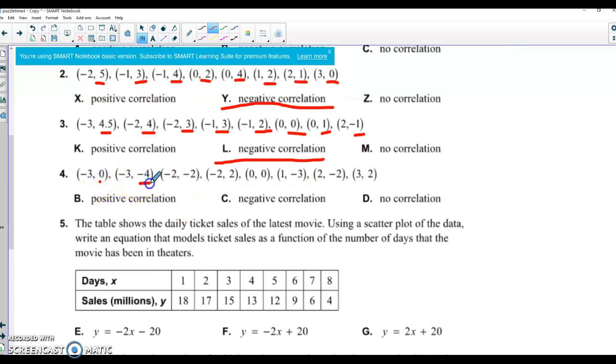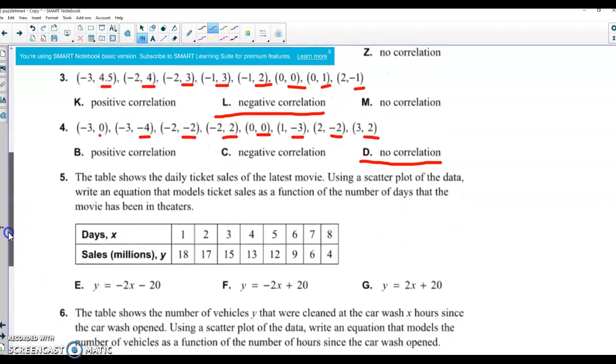Here from 0 to negative 4, we're going down, but then back up, and then up, and then down, and then down, and then up, and then down. So that was kind of split 50-50 there with the ups and the downs, so that one's probably one that's going to be a no correlation. There wasn't really a definite up or down there.